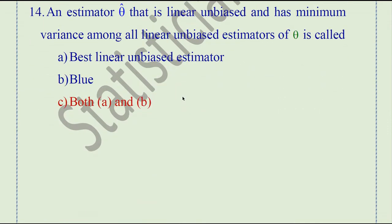Question number 14. An estimator theta-hat that is linear, unbiased, and has minimum variance among all linear unbiased estimators of theta is called the Best Linear Unbiased Estimator, or BLUE. The right answer is both A and B, because BLUE stands for Best Linear Unbiased Estimator.